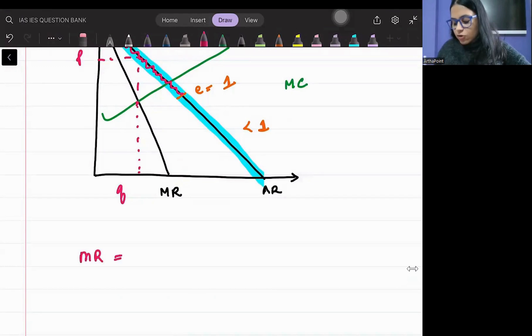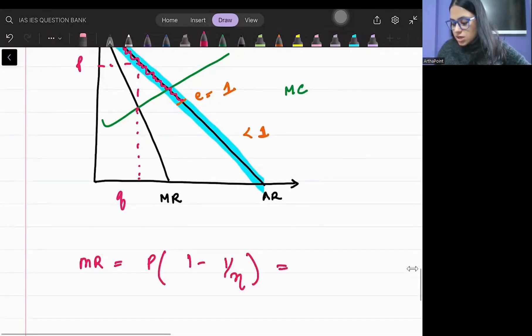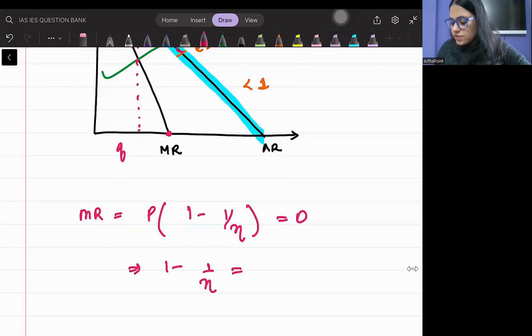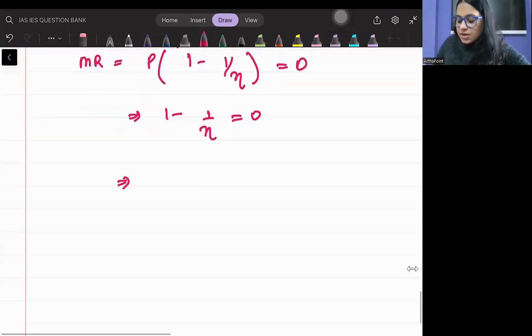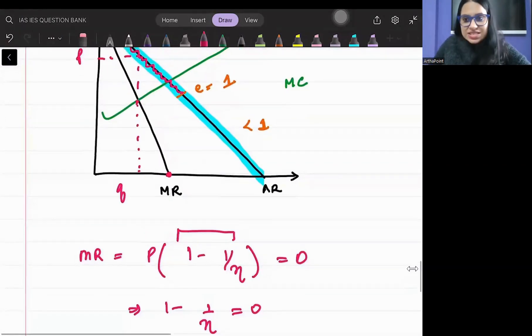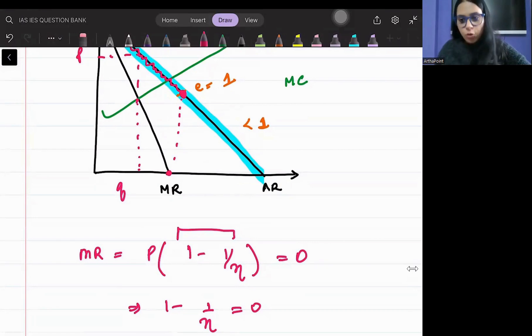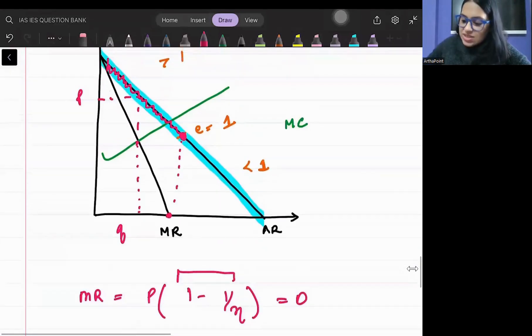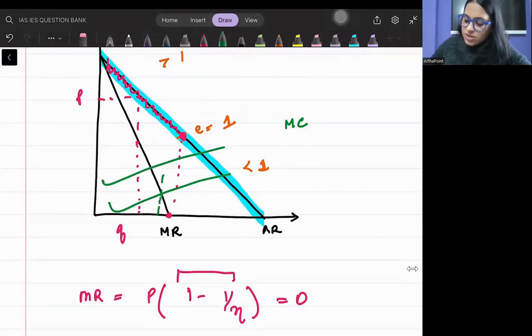Why? Because MR equals P times (1 minus 1 by elasticity) equals zero. If I put MR as zero here, price cannot be zero, so the product is zero if the second term is zero. From here, I will get elasticity exactly as one. So when MR is zero, at that time elasticity is one. But we have proved that we will always operate when MR is positive. It will always give me a quantity and price combination which is in the elastic region.